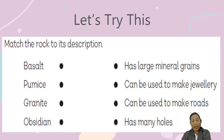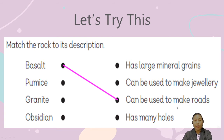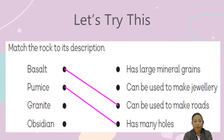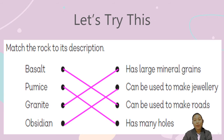Let's have the answers. Basalt — these igneous rocks can be used to make roads. Pumice — it has many holes. Granite — it has large mineral grains. And obsidian — it can be used to make jewelry.